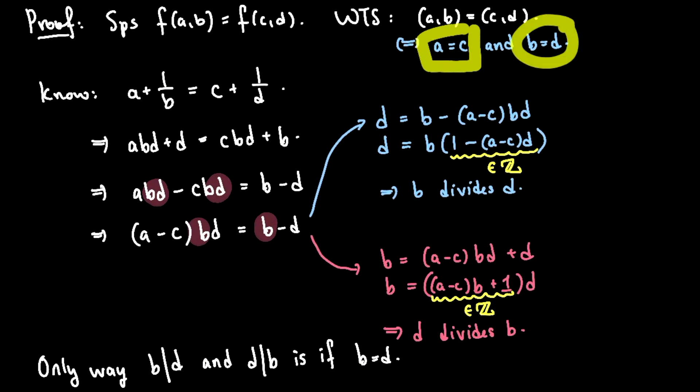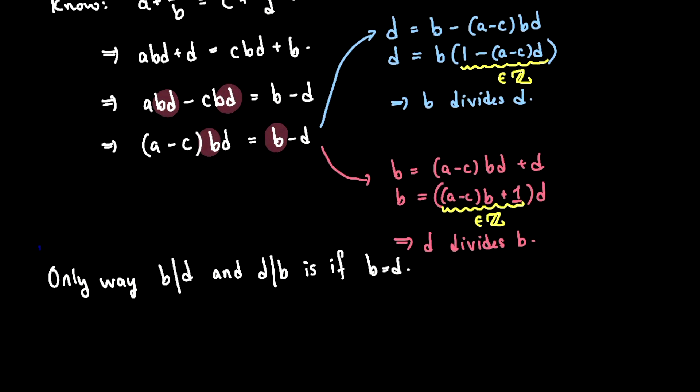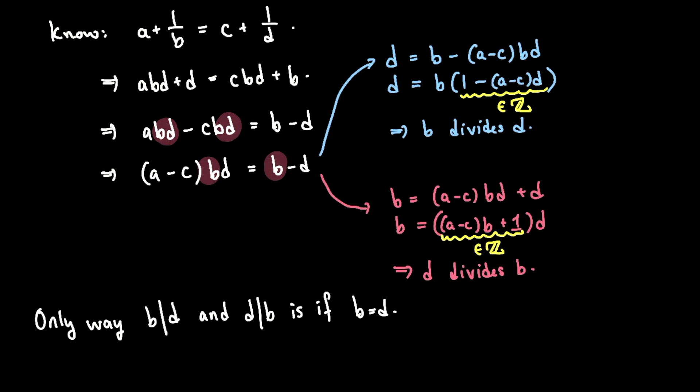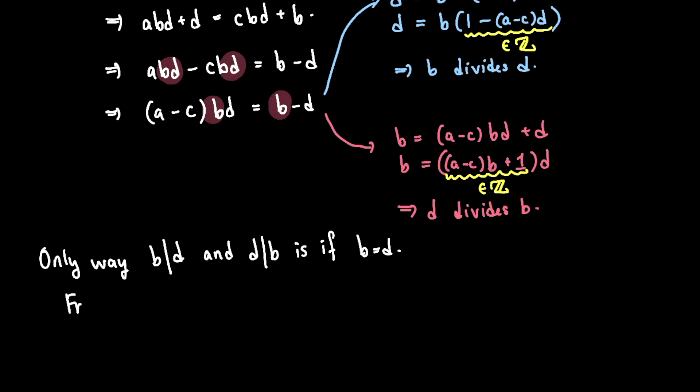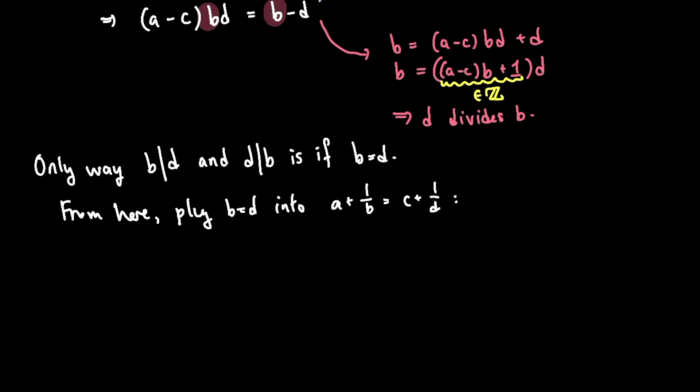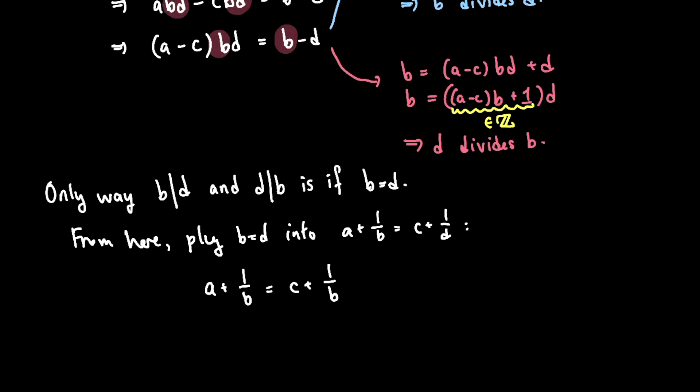So how do I get a equals c from that? I can just look back at this equation and say from here, plug b equals d into this equation, a plus 1 over b equals c plus 1 over d. So I can replace this d with a b. So I say a plus 1 over b equals c plus 1 over b. And I can cancel these 1 over b's from each side and I clearly get a equals c.